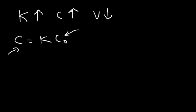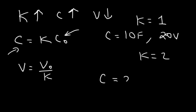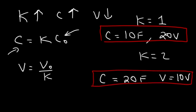Let's say you have a capacitor with 10 farads and the voltage across it is 20 volts with K equal to 1 (air between the plates). Now if we add a material with a dielectric constant of 2, the capacitance will increase to 20 farads, but the voltage will decrease to 10 volts. By increasing the dielectric, you increase the capacitance but decrease the voltage proportionally. Notice that the total charge remains the same.